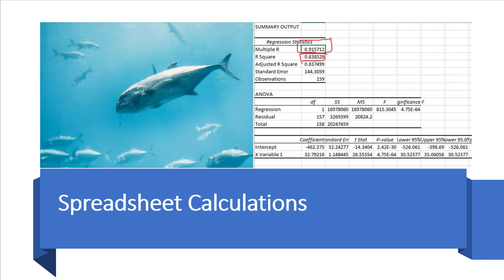The standard error was this 144 grams. And the number of observation was 159 fish. The adjusted R square was very close to the R square because, again, we had a single independent variable.